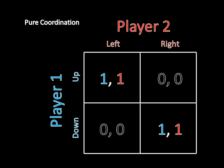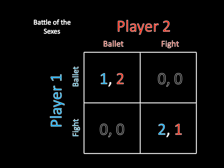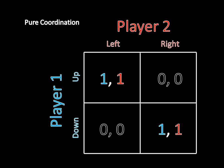This game, unsurprisingly, has two pure strategy Nash Equilibria as well: up left and down right. So there's a natural question here. In coordination games such as these, how do players select a pure strategy Nash Equilibrium and avoid the bad outcomes, given that there are multiple pure strategy Nash Equilibria? In Battle of the Sexes there were two — ballet/ballet and fight/fight — and in pure coordination there were again two: up left and down right. How do they select one of those equilibria and get the good coordination payoffs, and avoid these bad outcomes where you get zero for both players?